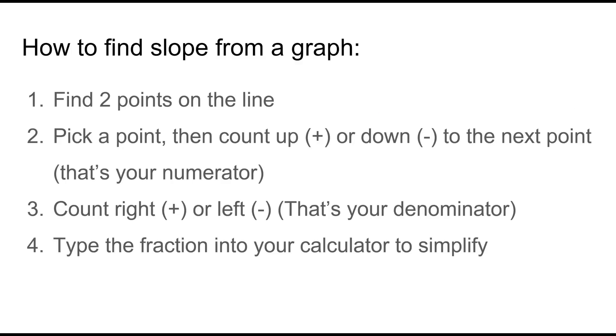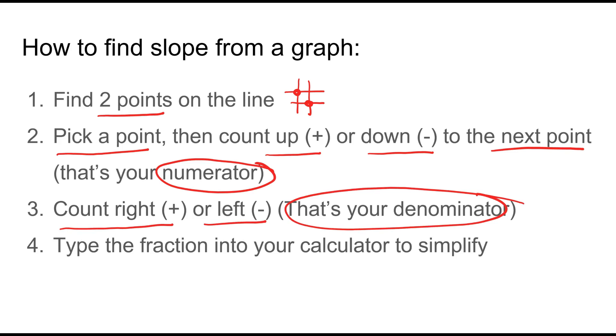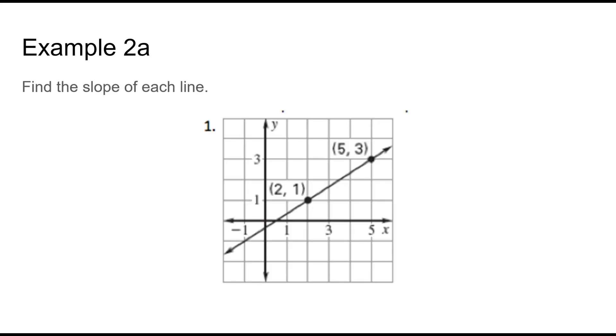How do we find slope from a graph? Well to find slope you need to have two points on the line. You can pick any two points. Just make sure that wherever they are they're hitting in between those corners so you can get nice whole numbers. You pick any point that you want to start and you say okay do I need to count up or do I need to count down to get to the next point. That number becomes your numerator. Once you get up or down then you count right or left and that number becomes your denominator. Always make sure to simplify your fraction when appropriate. Let's give it a try.